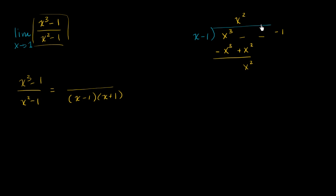x goes into x squared x times, plus x. x times x is x squared. x times minus 1 is minus x. And once again, we're going to subtract this. We'll swap the signs negative and positive. And so these cancel out. And we're left with x. And then we bring down a minus 1.